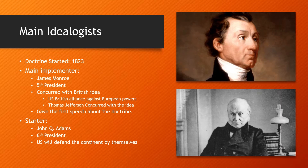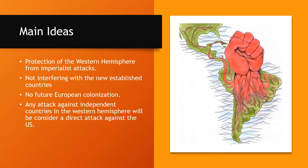The Monroe Doctrine is full of different policies. These are the four most important points. First, the protection of the Western Hemisphere — any European attack anywhere in the hemisphere would be backed by US power. Second, a policy of allowing new countries such as Mexico, Argentina, Peru, Colombia, and Venezuela to have their own governments with no European or colonial interference. Third, previous European colonies in America could not be regained. Fourth, any attack against these new countries would be considered a direct attack against the United States.